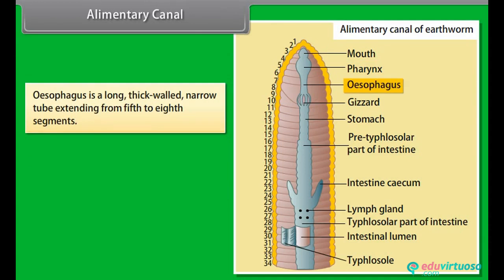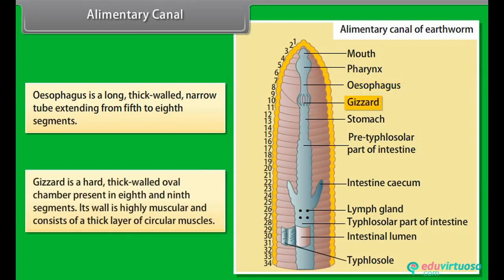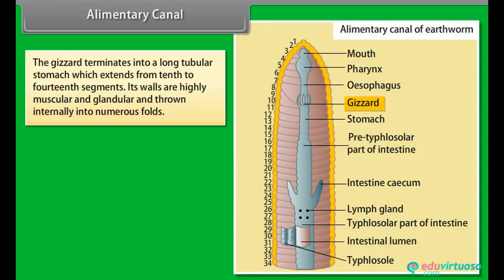The oesophagus is a long, thick-walled narrow tube extending from the fifth to eighth segment. The gizzard is a hard, thick-walled oval chamber present in the eighth and ninth segments. Its wall is highly muscular and consists of a thick layer of circular muscles. The gizzard terminates into a long tubular stomach, which extends from the tenth to fourteenth segments. Its walls are highly muscular and glandular, and thrown internally into numerous folds.